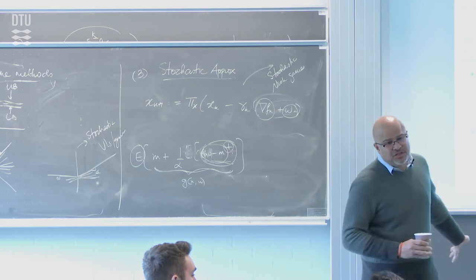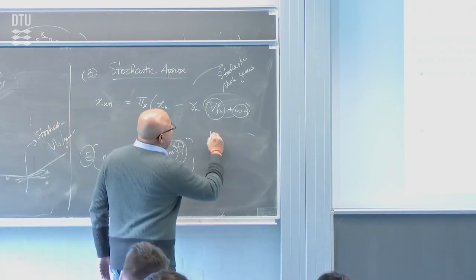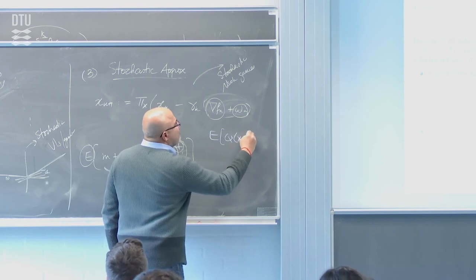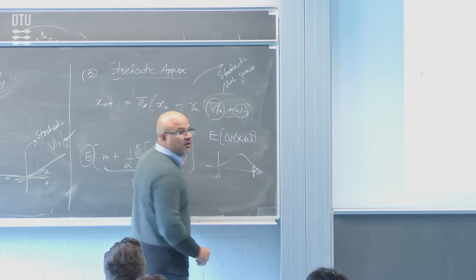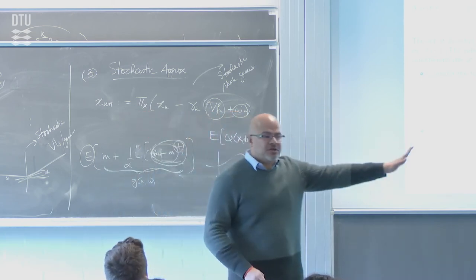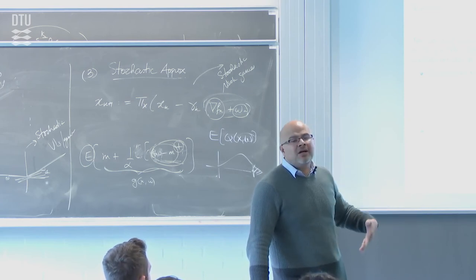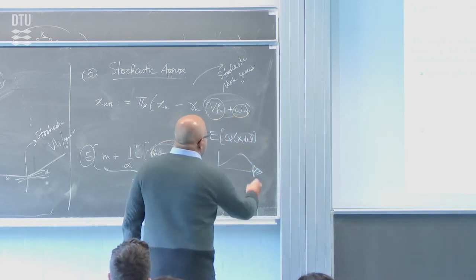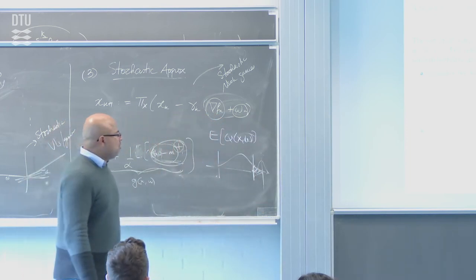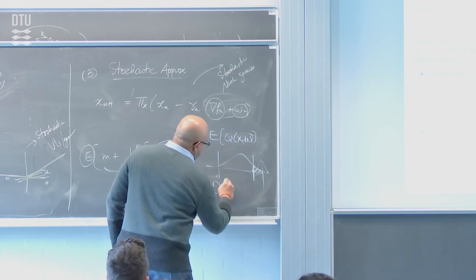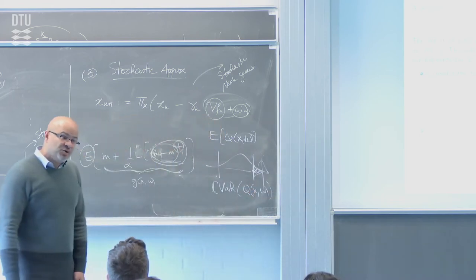To make sure everybody understands why CVaR came up: normally we take the expectation of q(x, omega) and average future costs. But if you're worried about tail behavior — not the average but the worst case — you want to minimize the conditional value at risk. CVaR says: conditional on the random variable being beyond the value at risk level, minimize the conditional expectation.